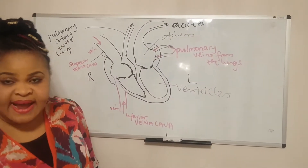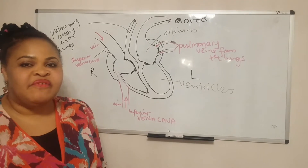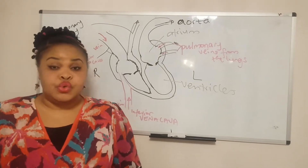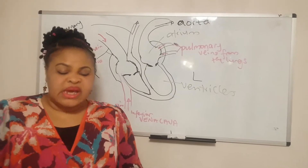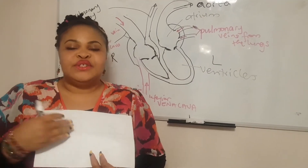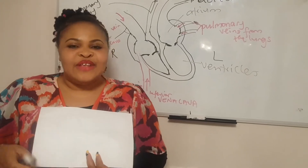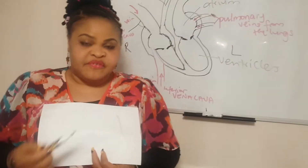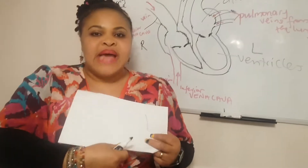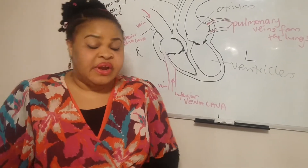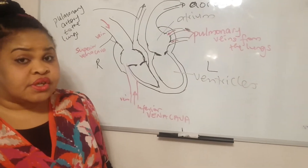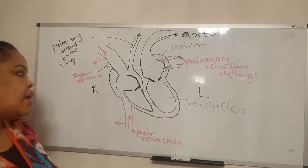Students sometimes struggle with remembering which is the right and the left hand side. I have a very simple way of helping you remember: take a piece of paper, draw the shape of a heart, put it against your heart, and use a pencil to indicate the left. When you put it down on your paper, it will be very clear which is the left side and which is the right side.